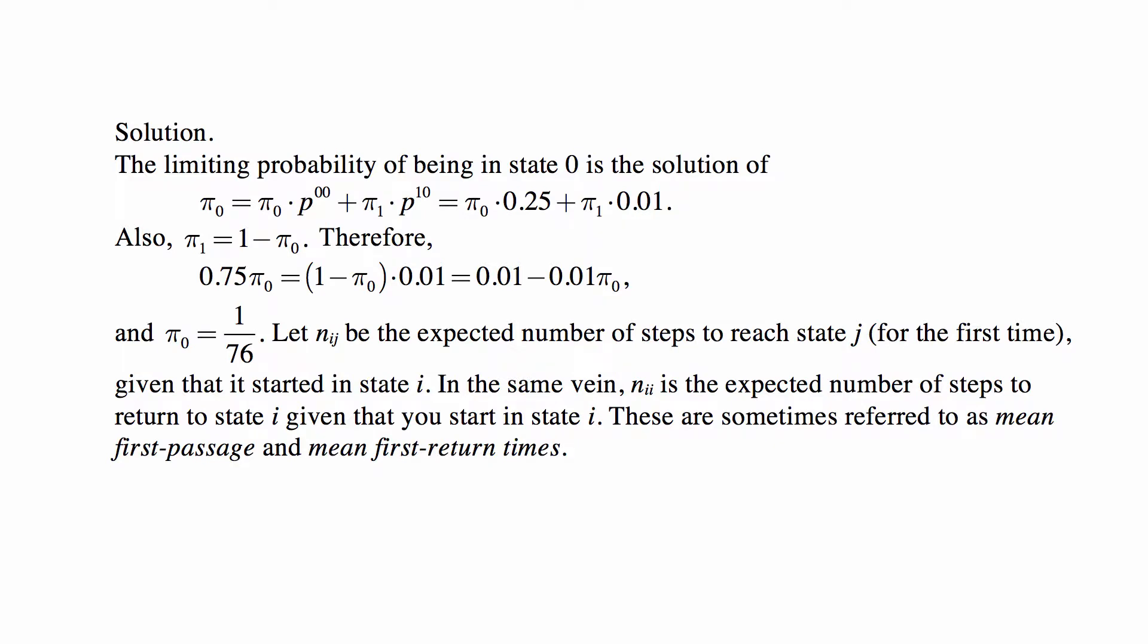We can see immediately that this is a finite, very finite, only two states Markov chain. All states communicate. So we can rather quickly calculate limiting probability of being in state 0 and being in state 1. The limiting probability of being in state 0 is the solution of π₀ = π₀·p₀₀ + π₁·p₁₀, which is π₀·0.25 + π₁·0.01.